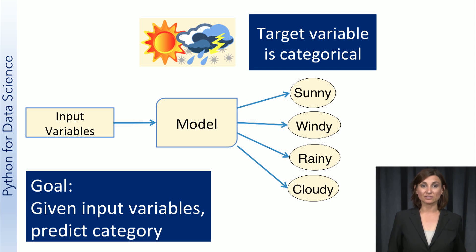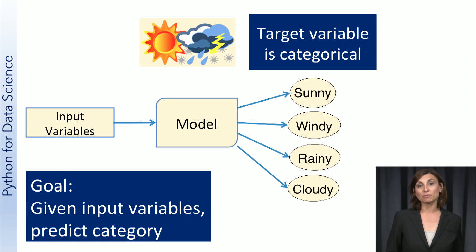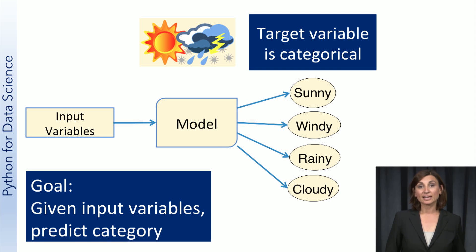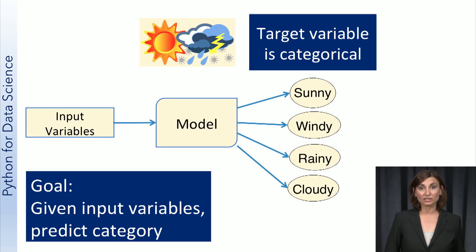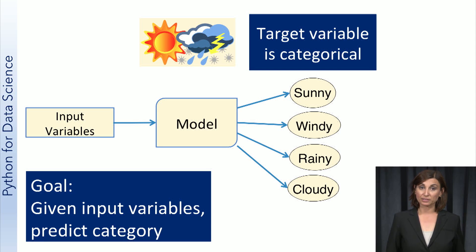For example, the classification problem we discussed before, and illustrated in this image, is to predict the type of weather. The target that the model has to predict is the weather, and the possible values for weather in this case are sunny, windy, rainy, or cloudy. The input data can consist of measurements like temperature, relative humidity, atmospheric pressure, wind speed, wind direction, etc.